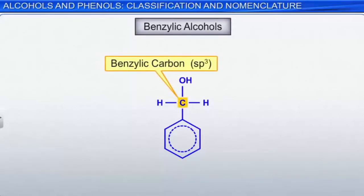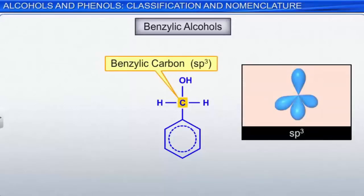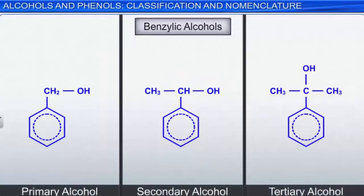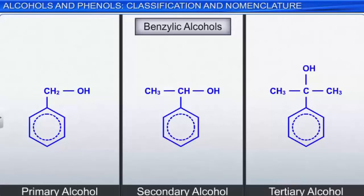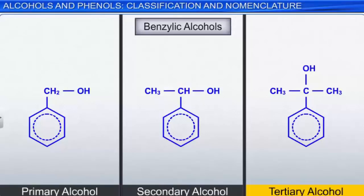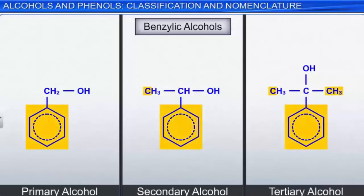A benzylic carbon has an sp3 hybridized carbon bonded to an aromatic ring. Thus, we can describe a benzylic alcohol as having a hydroxyl group attached to a benzylic carbon. The molecules illustrated here are examples of benzylic alcohols. Benzylic alcohols can also be classified as primary, secondary, or tertiary, depending on the number of carbon groups bonded to the benzylic carbon, as shown.